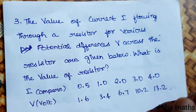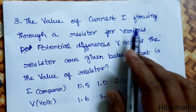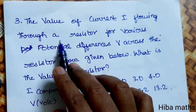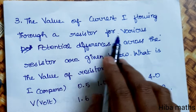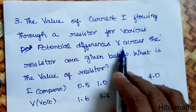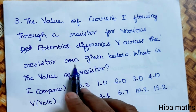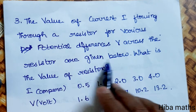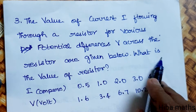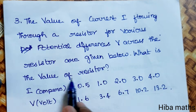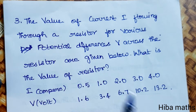The third question: the value of current I flowing through a resistor for various potential differences across the resistor are given in a table. We need to find the value of the resistor.